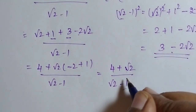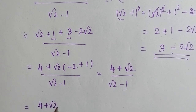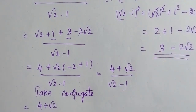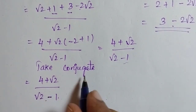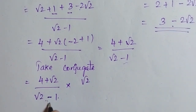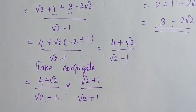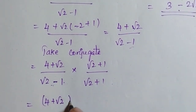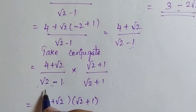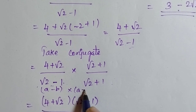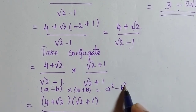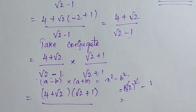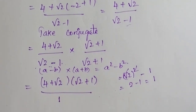I am going to take the conjugate to simplify further. Conjugate means changing the denominator sign and multiplying both numerator and denominator by it. So multiply by (√2 + 1)/(√2 + 1). The denominator becomes (√2 − 1)(√2 + 1), which is in the format A² − B² = (√2)² − 1² = 2 − 1 = 1. So the denominator becomes 1.